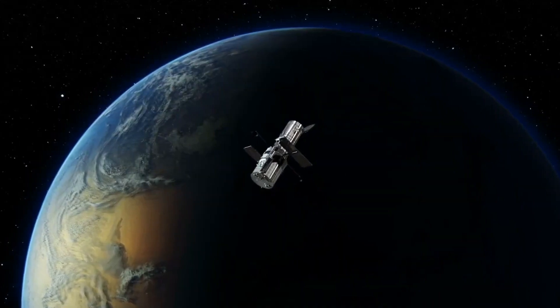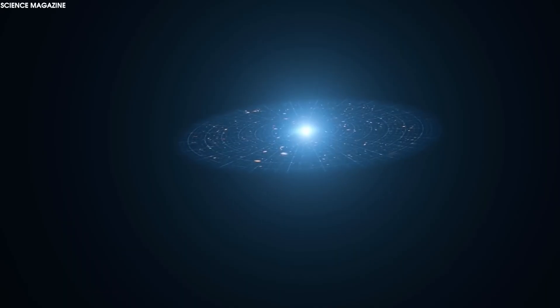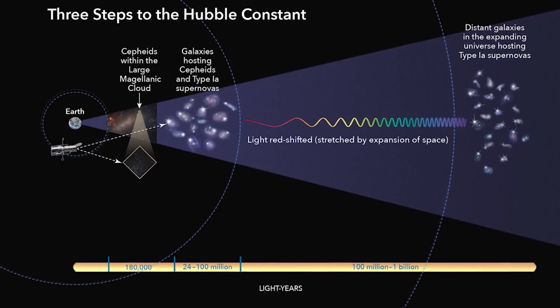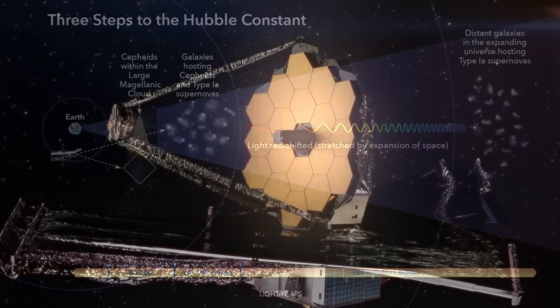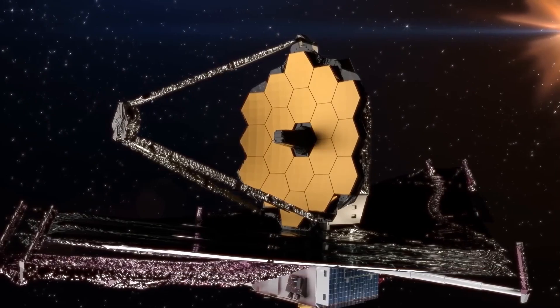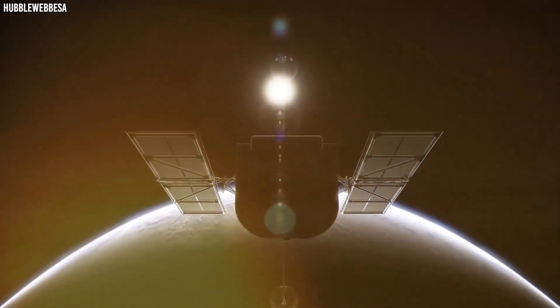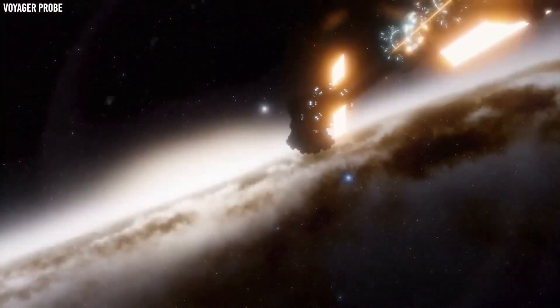As our cosmos grew, its overall matter density dropped, while the dark energy density remained the same, gradually making the latter the biggest contributor to its overall expansion. Added together, the energy densities of ordinary matter, dark matter, dark energy, and energy from light set the upper speed limit of the universe's expansion.